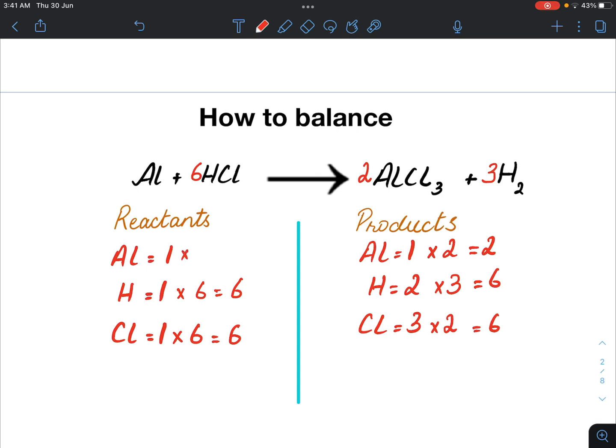And on the reactant side, I again multiply it with two. And I get two aluminum atoms. So again, on the reactant side, I add the coefficient two with aluminum to balance it.